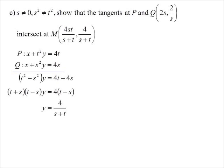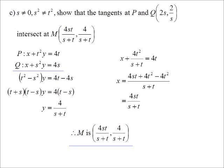Now, because this is a show that question, I can't just go, oh, and therefore X is this. I've actually got to show that's the X value. So I do my substitution. X plus 4T squared on S plus T is 4T. Rearrange that, and sure enough, we get X is 4ST on S plus T. So yes, M is that particular point.